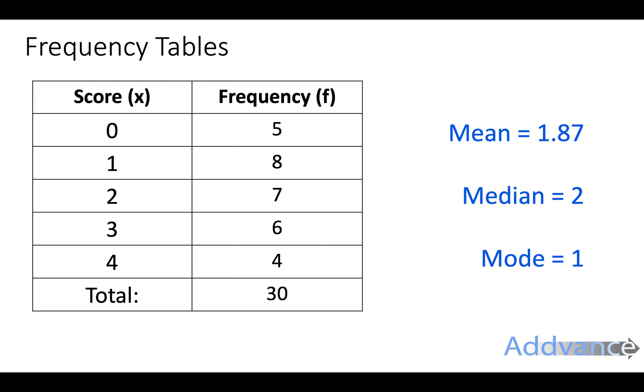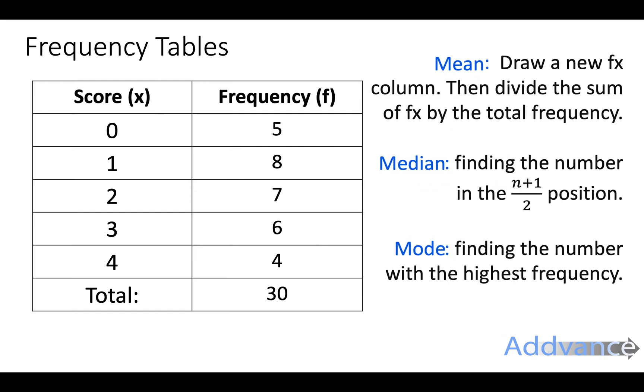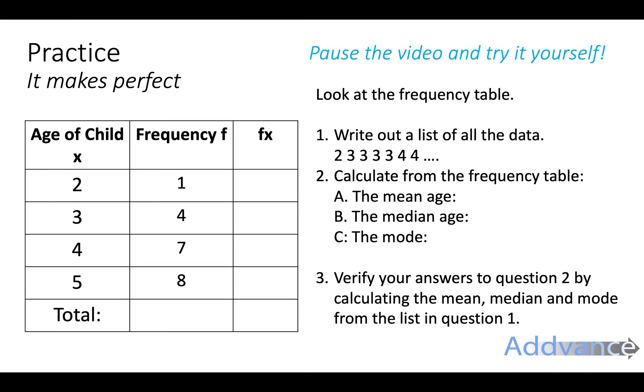And now we know how to work out the mean, median, and mode from a frequency table. The mean, we draw a new fx column and then divide the sum of the fx by the total frequency. The median, we find the number in the n plus 1 over 2 position. And the mode, we find the number with the highest frequency. The mode is the easiest, we just look at these numbers in the frequency column, which one is biggest.